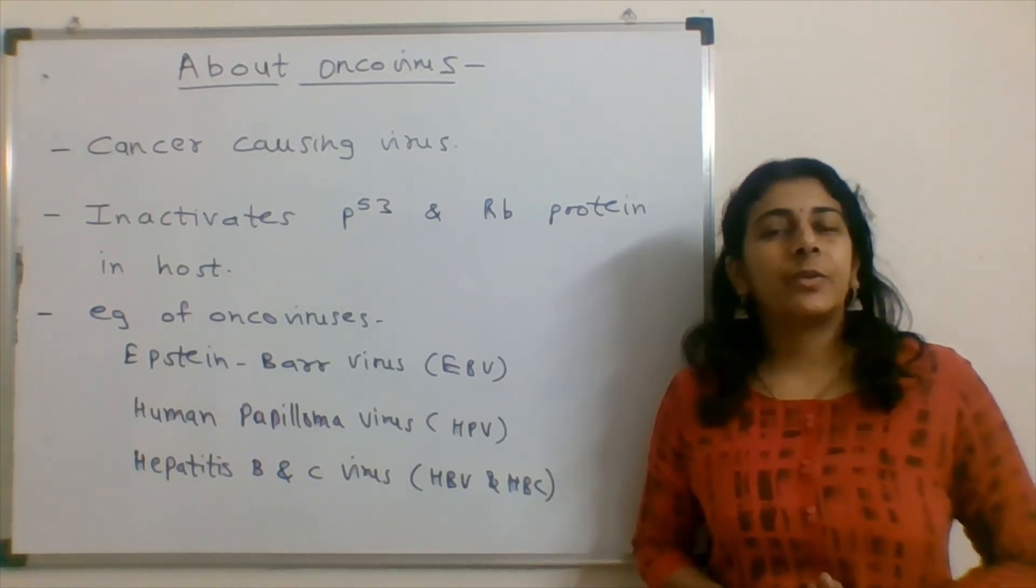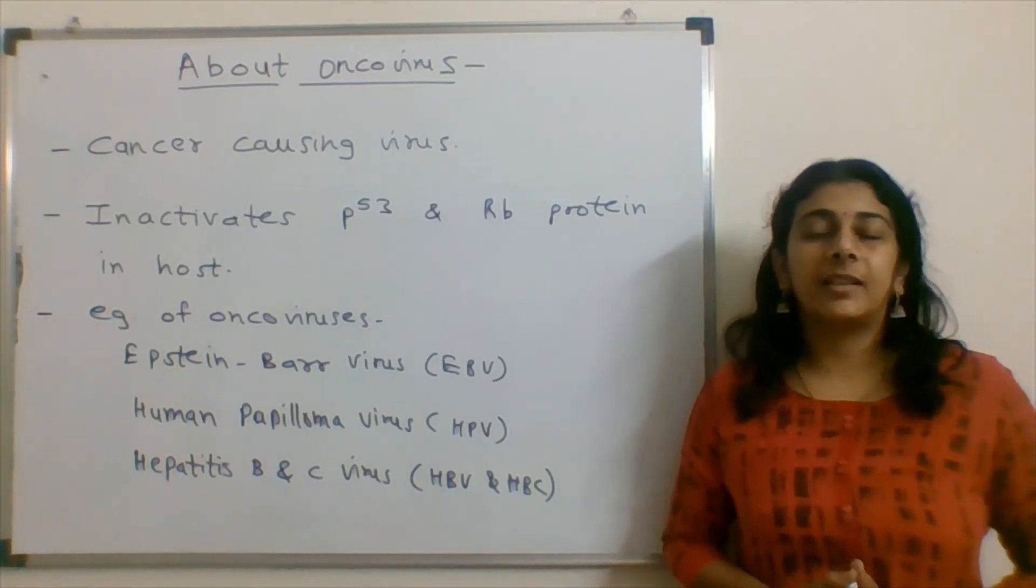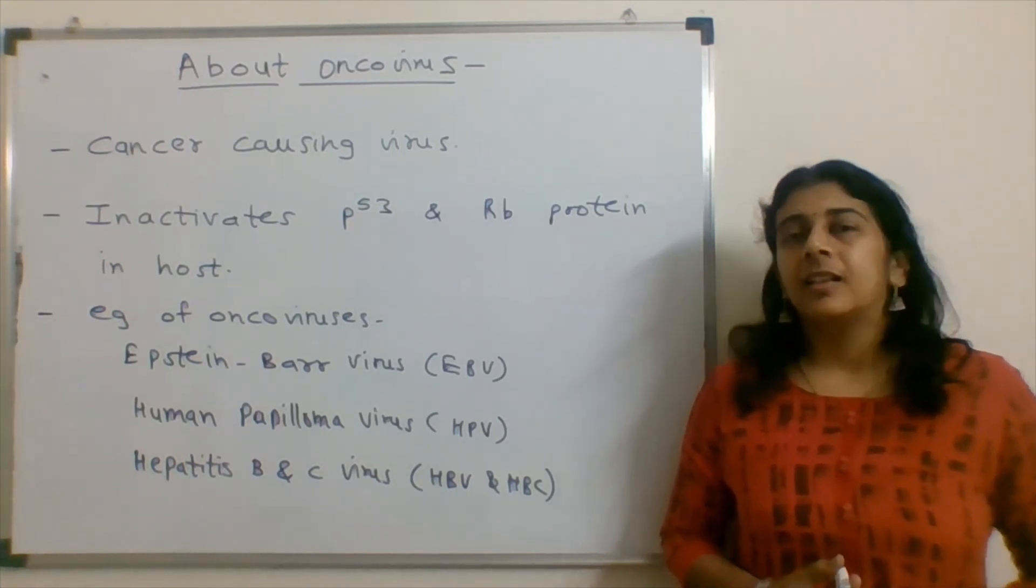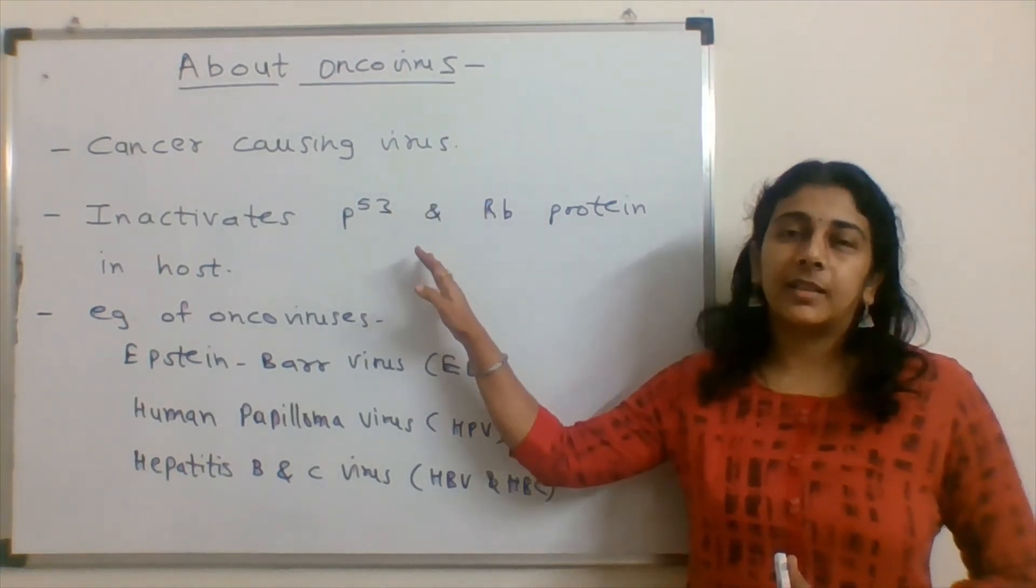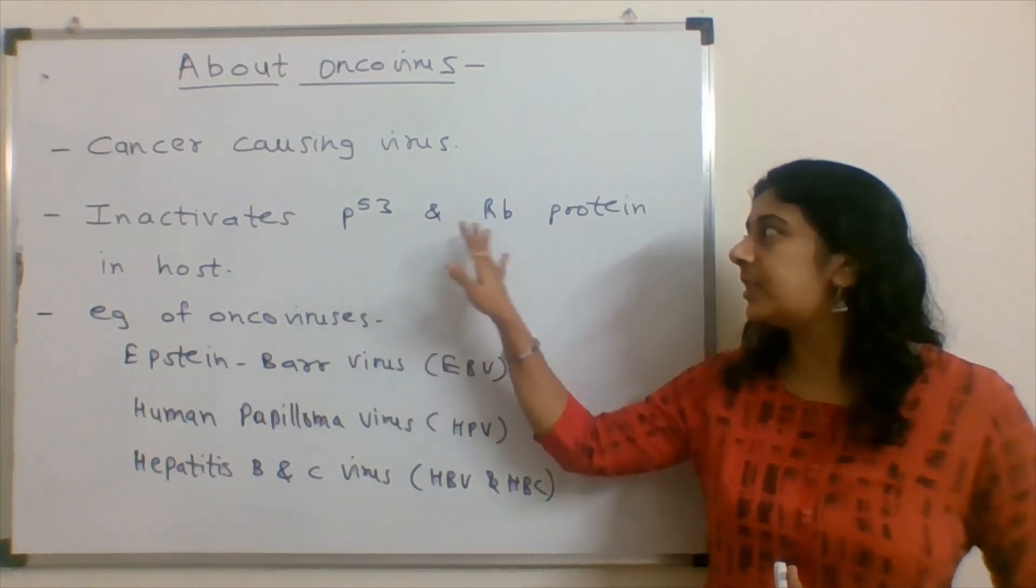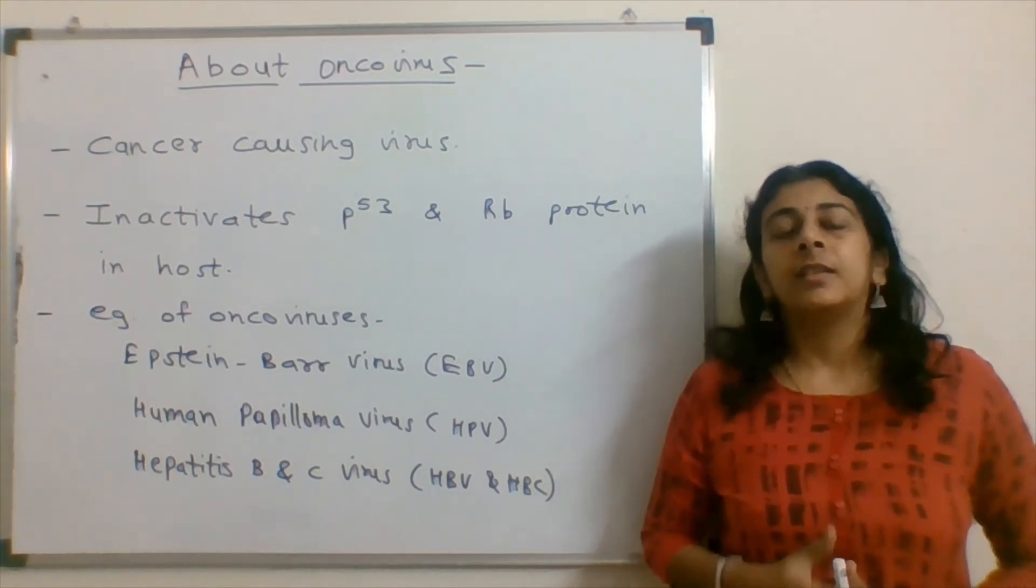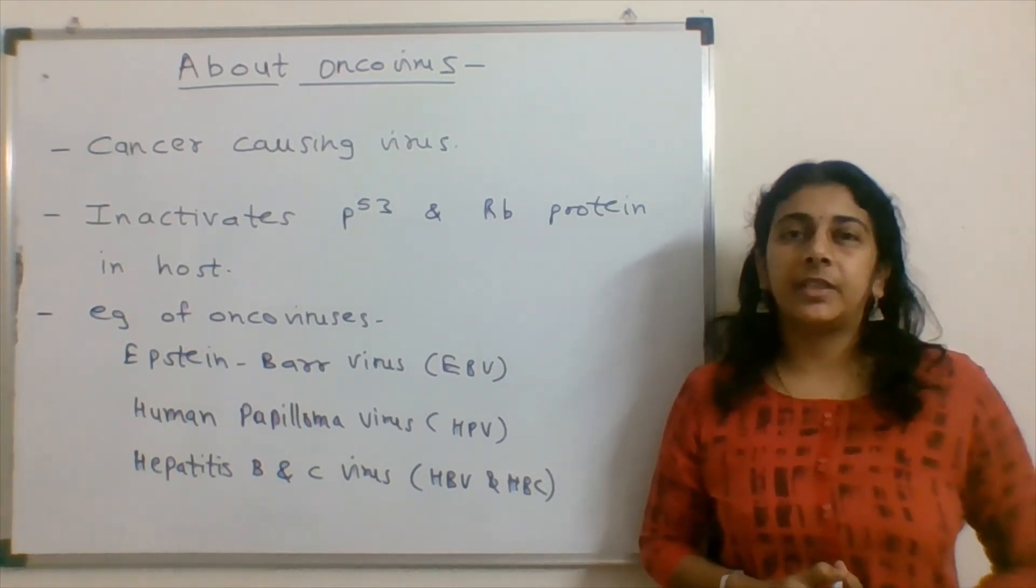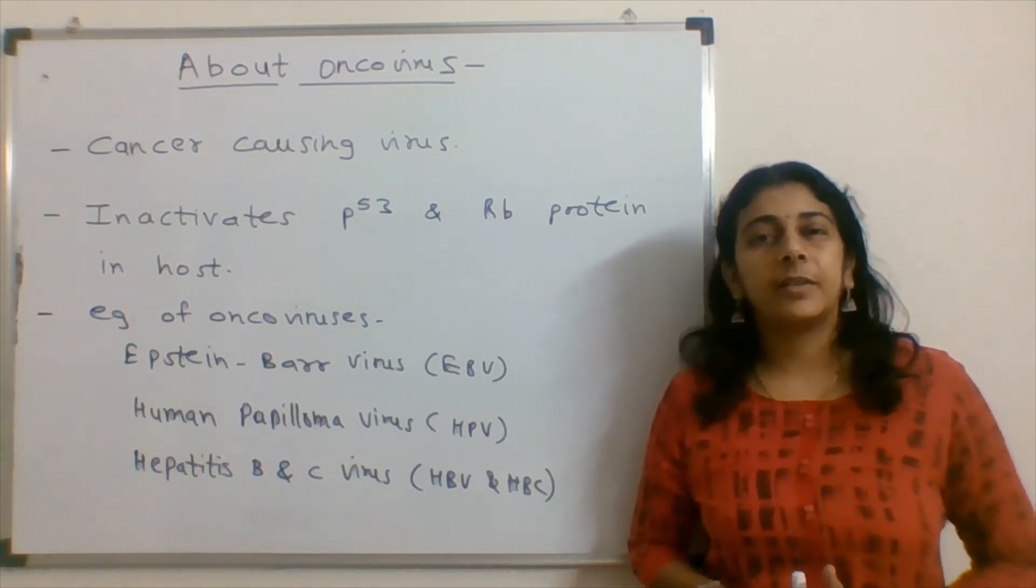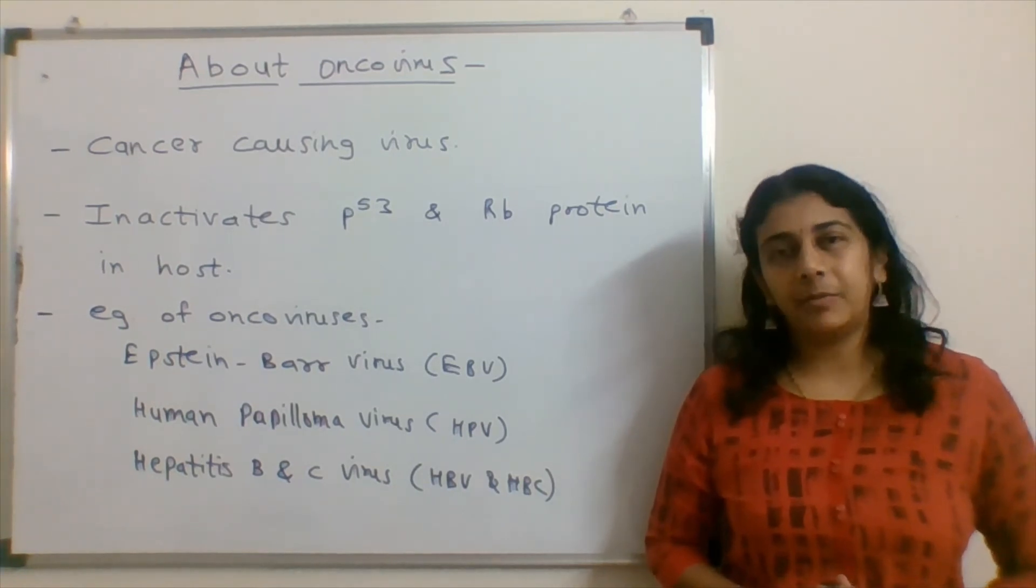Knowing more about the oncoviruses. Oncoviruses are basically the viruses which cause cancer. During this infection they inactivate p53 and retinoblastoma protein in the host. p53 and retinoblastoma are cell cycle control proteins. These are tumor suppressor proteins.